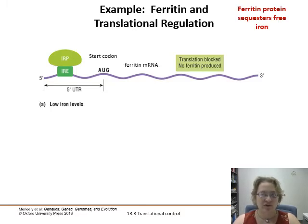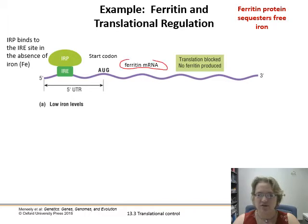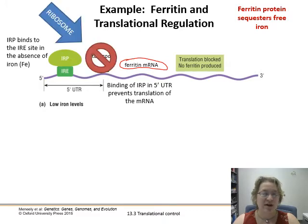The ferritin protein sequesters free iron — we don't need it if there's a lot of iron around. When there are low iron levels, the iron response element binds to the mRNA coding for ferritin. The iron response protein binds onto that IRE site in the absence of iron, sits there, and prevents translation. The ribosome cannot make its way past that IRP to reach the start codon.